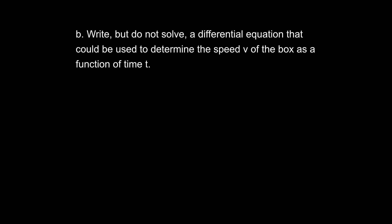Part B asks us to write but not solve a differential equation that could be used to determine the velocity of the box as a function of time. The box has a forward force and a backwards force; we're focused on the x-axis. We use the sum of forces strategy — write out Newton's second law: the net force in the x-axis equals mass times acceleration.